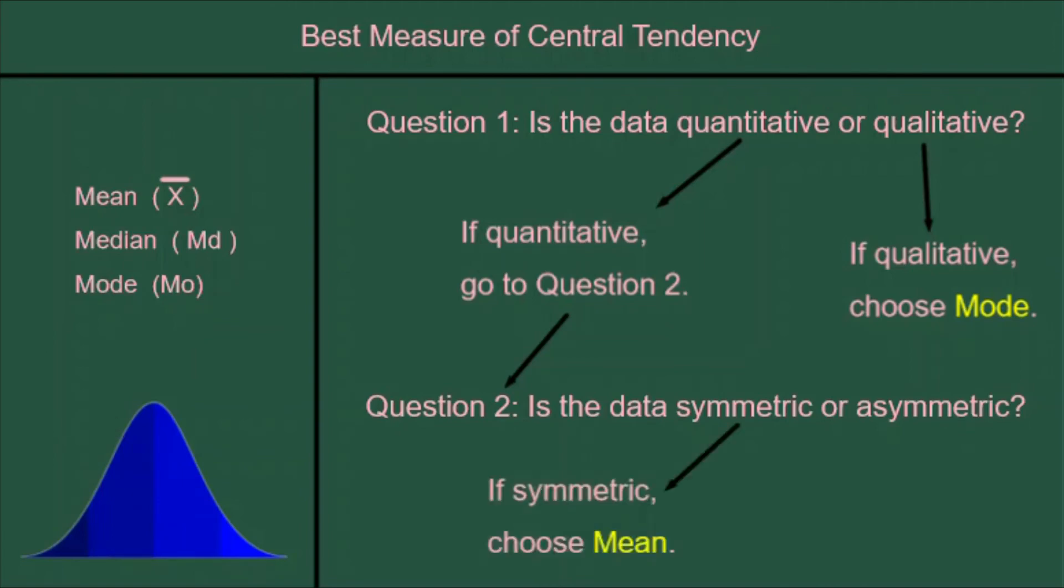If the data is symmetric, we choose the mean, the average, the x-bar. And that's always the one that we would most like to choose. It is considered the most reliable.